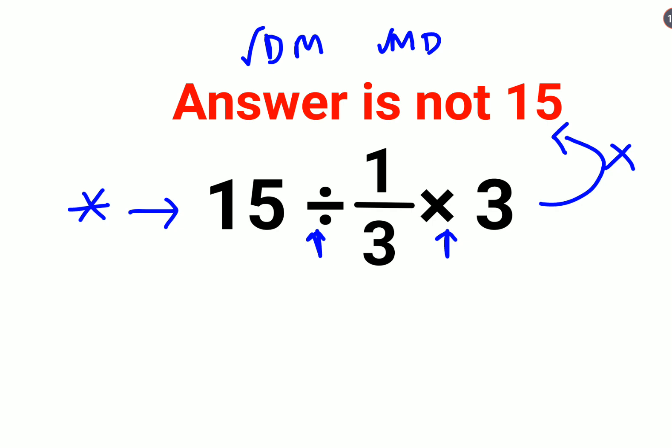So in that case, invariably, half of the population who are following PEMDAS will get one answer. People who are following BODMAS will get another answer. Please understand, division and multiplication are equal in priority.